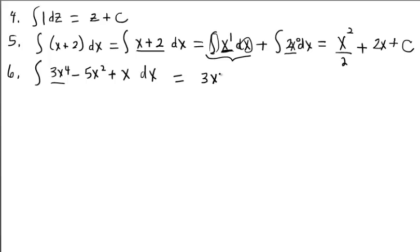Keep the three, keep the x, increase the four to five, divide by five. I'm not going to have to come back and simplify. I'm in good shape. Minus, moving on to this term. Keep the five, keep the x, bump the exponent up to three, divide by three. Move to this term, write in the first power if you want to. Keep the x, increase to two, divide by two. Put a plus c for all the constants that you would have there.